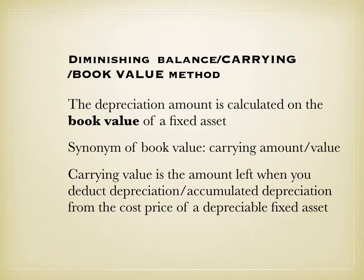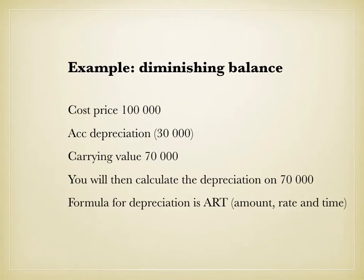Not every fixed asset loses value — land and buildings increase in value over time, so you don't calculate depreciation on them. For the diminishing balance method: if the cost price is 100,000 and accumulated depreciation over time is 30,000, then the carrying value or book value is 70,000, calculated by subtracting accumulated depreciation from cost price.